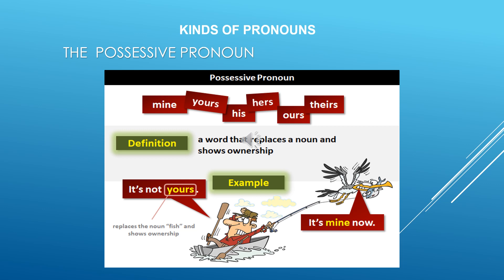So now let's concentrate on what a possessive pronoun is. Very much like the noun, it is a word that replaces a noun and also shows ownership — it has to show that it belongs to someone. For example: 'This book is mine. Is that yours? This is his book. This book is hers. These are ours. And it is theirs.' So all these are possessive pronouns. It's not yours, it's mine now.